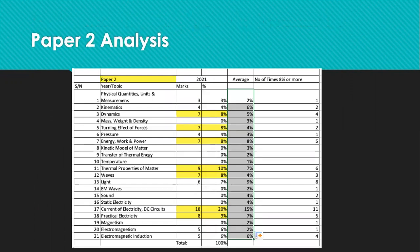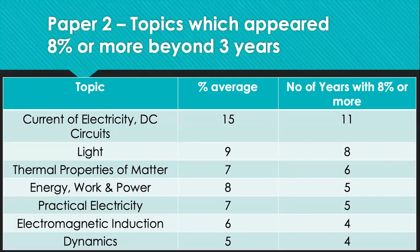Looking at paper two, this is a spreadsheet that I use to compute the average percentage and the number of times the topic appear 8% or more over the past 11 years. So as expected, current of electricity and DC circuit have a high average of 15%. So this topic is very, very, very important, a very significant topic that candidates should not ignore with every year with a high percentage of 8% or more without fail.